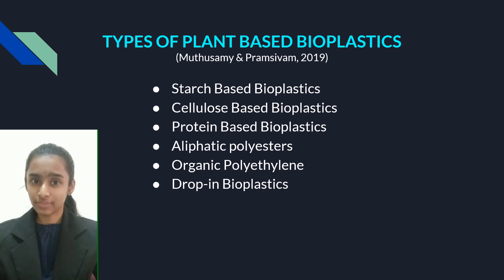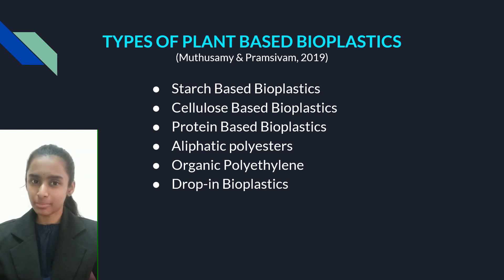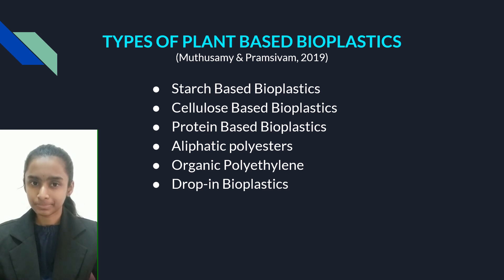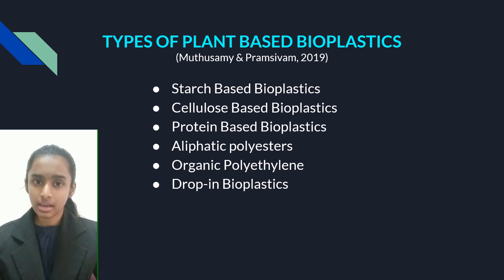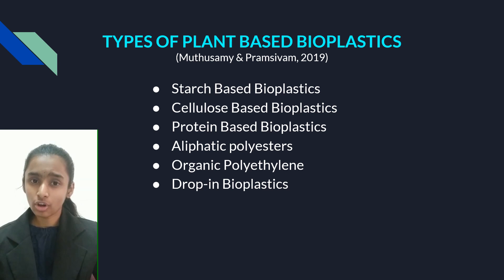Other aliphatic polyesters include PHV (poly-hydroxyvalerate), PHH (poly-hydroxyhexanoate), PLA (poly-lactic acid), PA2 (polyamide-2), and many more. They are all more or less sensitive to hydrolytic degradation and can be mixed with other compounds. Organic polyethylene is polyethylene that can be produced from the fermentation of raw agricultural materials like sugarcane and corn, rather than fossil fuels. Drop-in bioplastics are a biosimilar copy of petrochemical plastics but are made up of biomass instead of fossil oil.